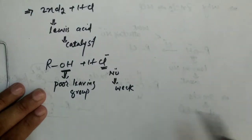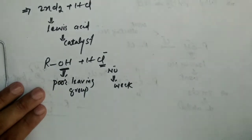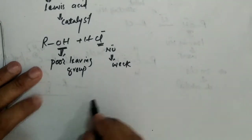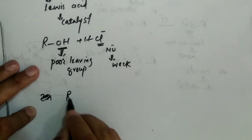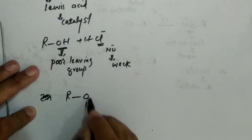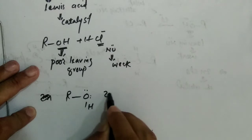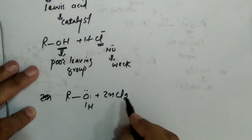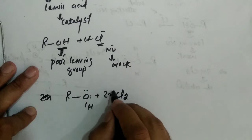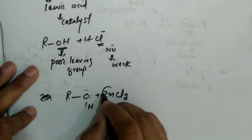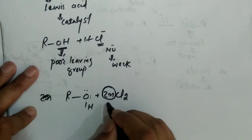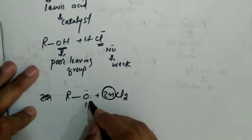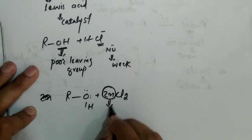So, we use ZnCl2 and ZnCl2 makes a complex with OH of the alcohol and Zn accepts electron from the O of the OH group because zinc has d orbital, d available orbital.